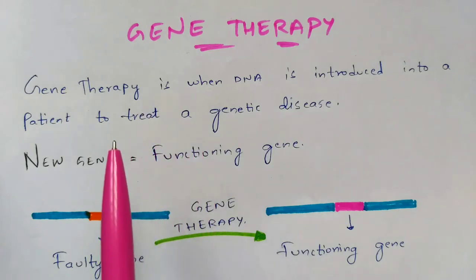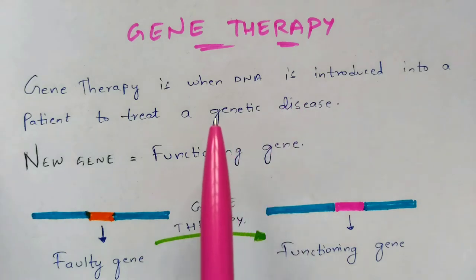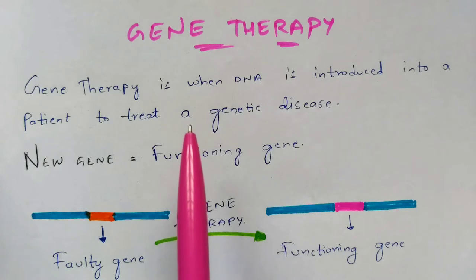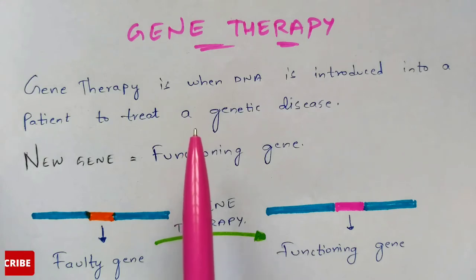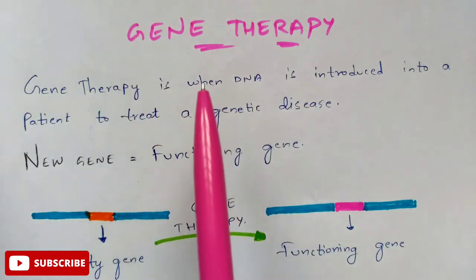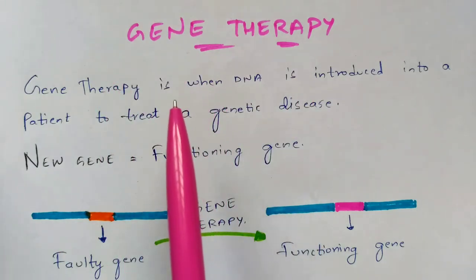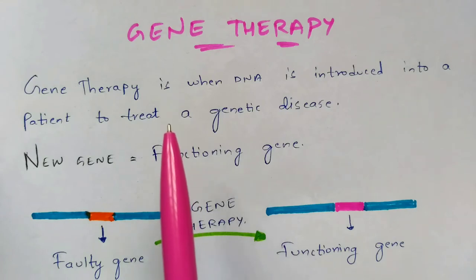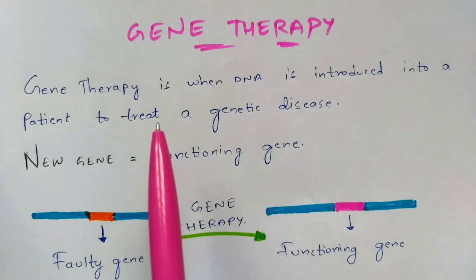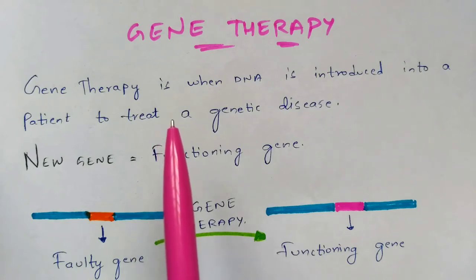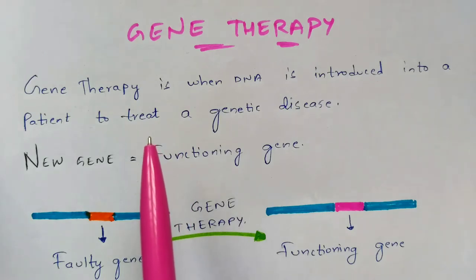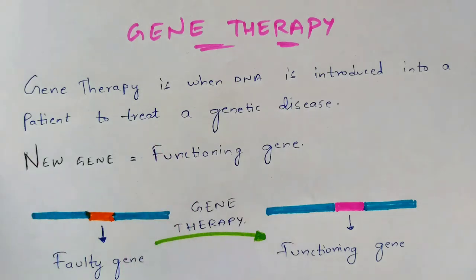How do genetic diseases occur in a human being? Once there is a specific gene — a faulty gene — present in that human being, the genetic disease will occur. By the process of gene therapy, you can cure the genetic disease by removing that faulty gene and inserting a new, synthesized or functioning gene into that patient.